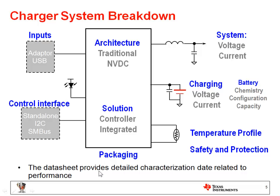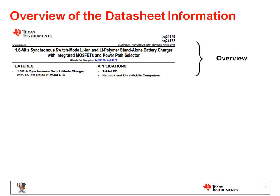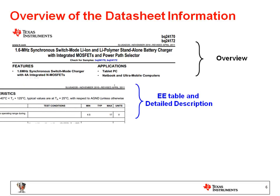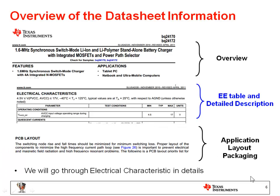The data sheet provides detailed characterization data related to performance. The data sheet has three major parts. The first page is the overview of the key features, application and packaging information. The second part is the electrical characteristics data and the detailed feature description. The third part is the application, layout and packaging information. We will focus on the second part, which is the EC table and the detailed feature descriptions.